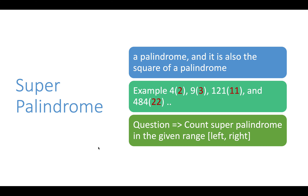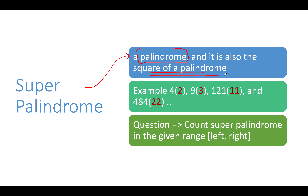What is a super palindrome? A super palindrome is itself a palindromic number which is also a square of a palindrome. So there are two caveats: one, it should be a palindromic number itself, and two, it should be a square of a palindromic number.